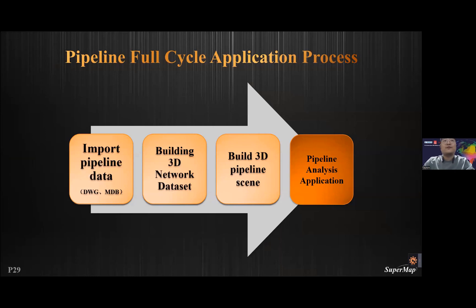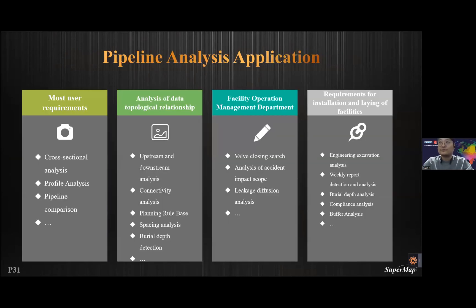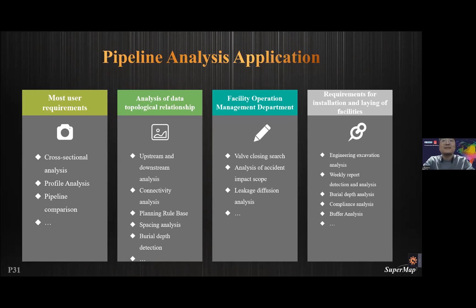The last step of the pipeline full circle application process is pipeline analysis and applications. Users with different roles will have different application requirements for pipelines. I've listed some of them here — such as cross-sectional analysis or upstream and downstream analysis, mainly used by analysts of data topological relationships. For the facility operation management department, they often use valve closing search or analysis of accident impact scope. For installation and laying requirements, weekly patrol detection and analysis or buffer analysis are commonly used.